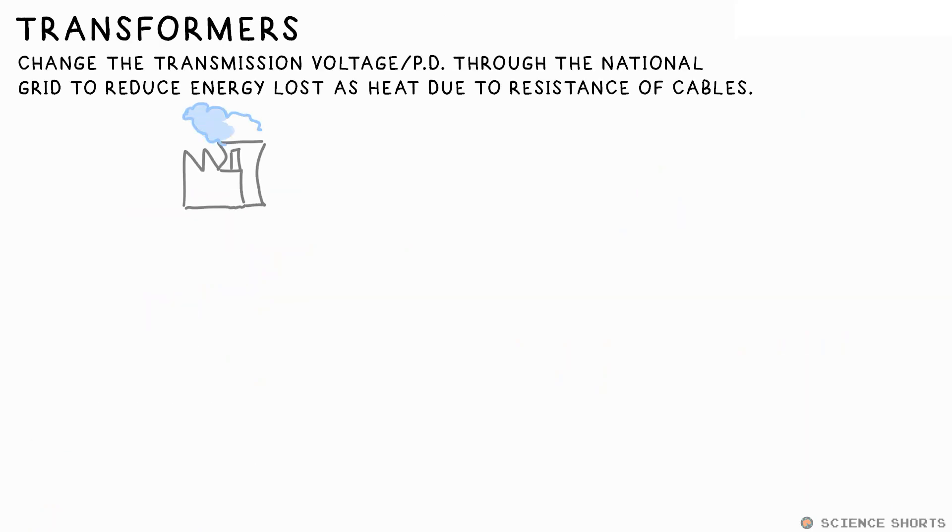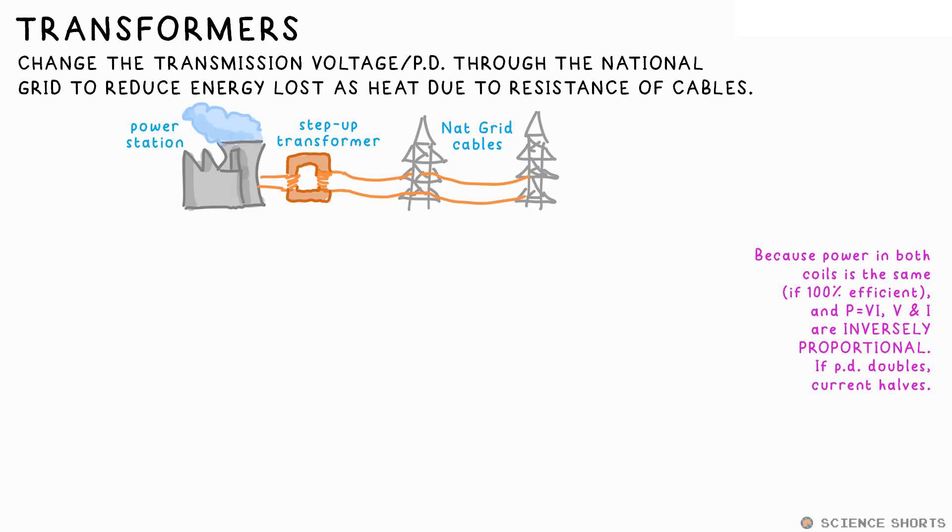Transformers are used in the national grid to change the voltage at which electricity is transmitted through the overhead cables. The current from a power station is so high that too much energy would be lost due to the resistance in the cables if it just went straight into them. Therefore, a step up transformer increases the voltage before it enters the grid. This in turn reduces the current, so less energy is lost as heat due to resistance. The reason one goes up when the other one goes down is because electrical power is equal to voltage or PD times current, V times I.